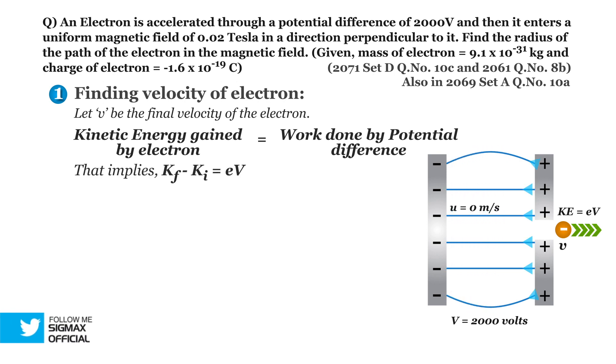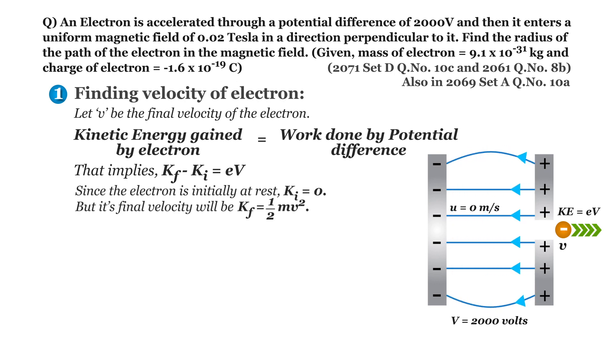That implies Kf which is final kinetic energy minus Ki which is initial kinetic energy is equal to E times capital V, where E is the charge of electron and capital V is potential difference. Since the electron is initially at rest, its initial kinetic energy becomes zero, whereas its final kinetic energy will be half m v square. Hence, the equation becomes half m v square is equal to E times capital V.